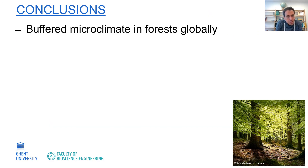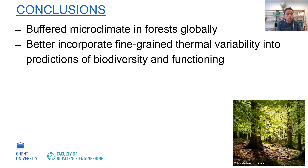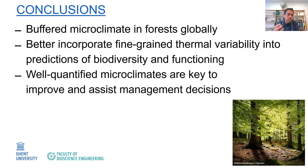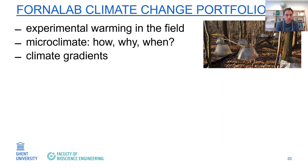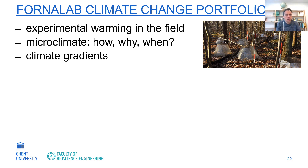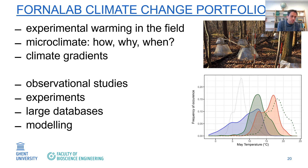To conclude, forest microclimates are buffered across the globe. It is important to incorporate this into predictions of biodiversity, ecosystem functions, and services. These microclimates are key to improving adaptation to climate change and informing management decisions, and edge effects cannot be neglected. At the Forest and Nature Lab, our research focuses on climate change using experimental warming in the field, microclimate quantification, and climate gradients from north to south Europe, from low to high elevation, and urban gradients — using observational, experimental, large database, and modeling approaches.